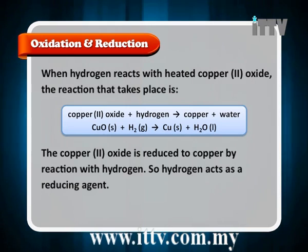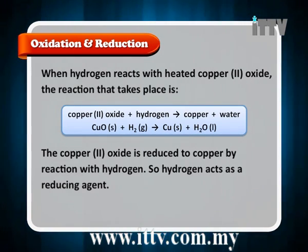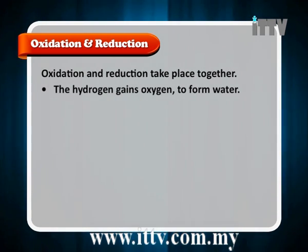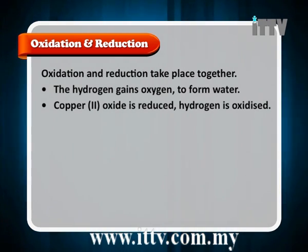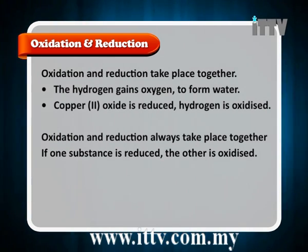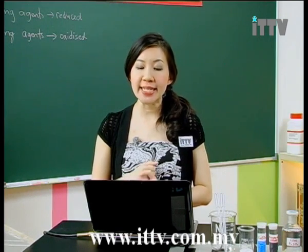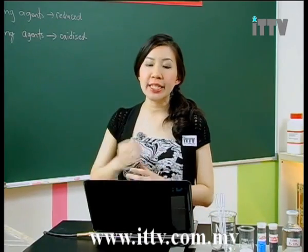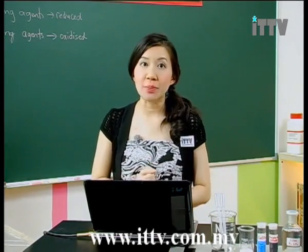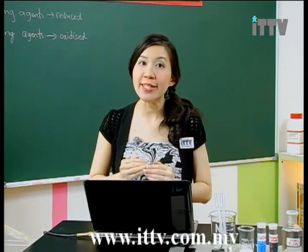For the second example, whereby copper(II) oxide was reacted with hydrogen gas, hydrogen gains oxygen to form water, copper(II) oxide is reduced, and hydrogen is oxidised. Oxidation and reduction always take place together — if one substance is reduced, the other is oxidised. If hydrogen is oxidised, that means hydrogen is the reducing agent, because the reducing agent is oxidised.